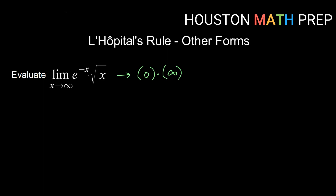So what we need to do is just rewrite our function in our limit to see if we can make it into a quotient and therefore get one of those forms. Here I'm going to take this negative exponent and bring e to the x down to the bottom of my fraction bar. Now when I evaluate this, both the numerator and denominator go to infinity, so now we have the ∞/∞ indeterminate form that allows us to use L'Hôpital's rule.